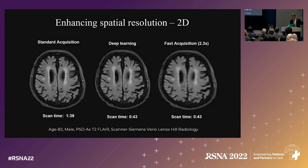It's not just denoising with SubtleMR. There are circumstances where the deep learning techniques can also increase spatial resolution. Here's our routine scan at 30 slices — if we decide to go faster, we end up with a softer scan.